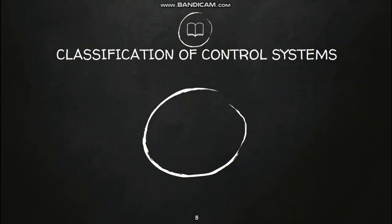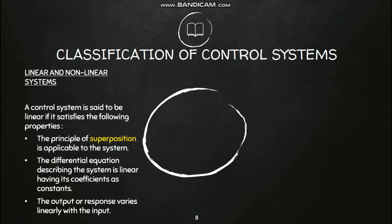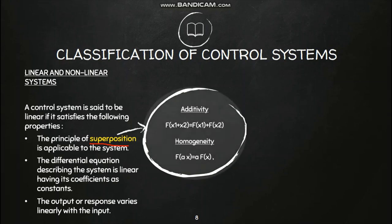Moving on to the next topic: classification of control systems. The most important classification is linear vs. nonlinear. A control system is said to be a linear control system if it satisfies the principle of superposition. The principle of superposition consists of two parts: additivity and homogeneity. Additivity means that the output of individual inputs summed together is equal to the cumulative output of the combined inputs — that is, f(x1) + f(x2) = f(x1 + x2).